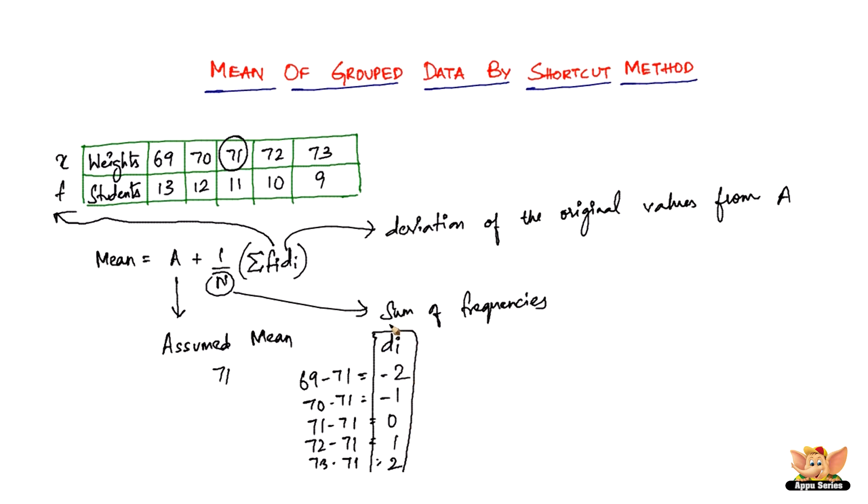You need to multiply these values with FI. Here, it's a pretty simple thing because you don't have to multiply big numbers—you assume a mean. That's the difference between the shortcut method and the direct method. Remember, the shortcut method is used to avoid bigger calculations.